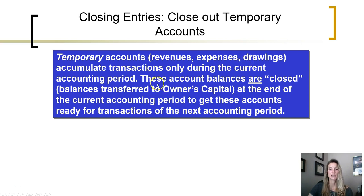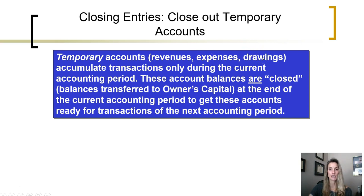These account balances are closed — and by closed I don't mean we just erase them off of the books. What we do is we take the balances in those accounts and transfer them to the owner's capital account at the end of the accounting period. By transferring the balances out of the temporary accounts and into the owner's capital account, we are transferring out the equity transactions from the current accounting period so that when these accounts start recording transactions for the new accounting period, they are only recording transactions for the new period and not mixing transactions from two different accounting periods.